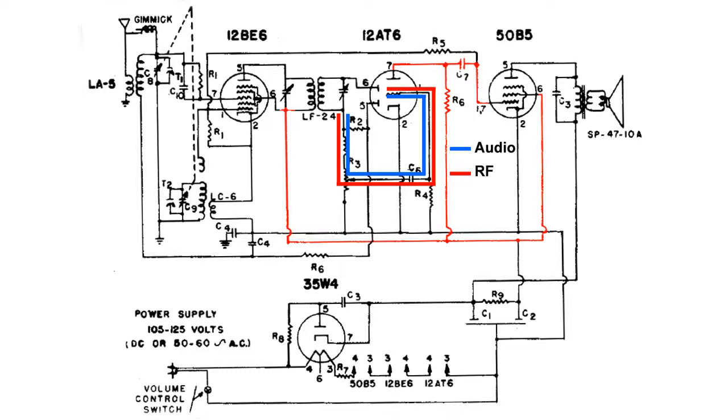So that capacitor C5 is very important in this circuit. It drains away the unwanted RF signal and allows the audio signal to be amplified by the 12AT6.